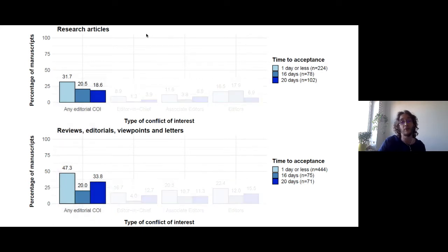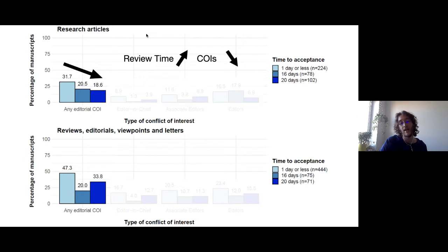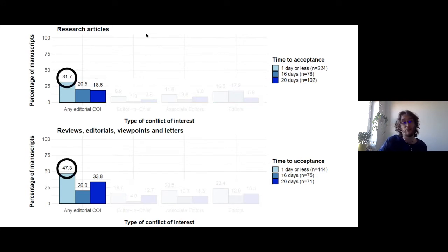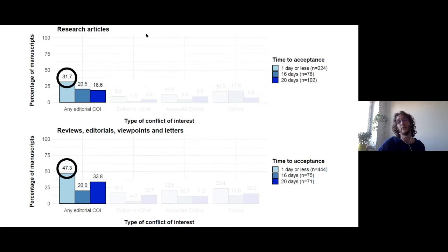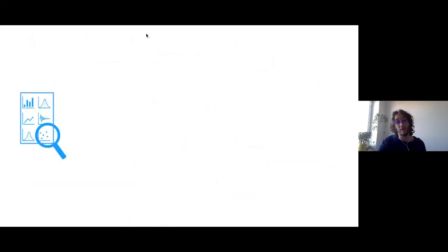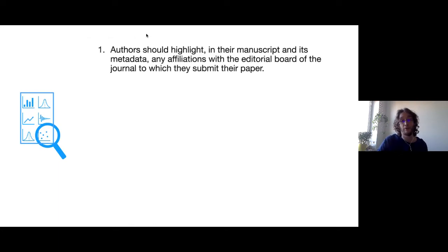What we can see is that as review time increases, the percentage of conflict of interest decreases. Another thing we notice is that we would expect a huge difference between research articles and reviews and editorials, but the difference is actually not that big. So if you don't have open reviews to check how thorough the reviews have been, it's very hard to know if papers reviewed in a day or less were actually thorough or not.